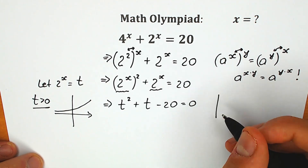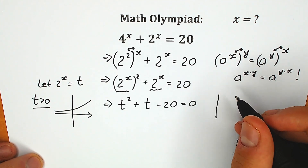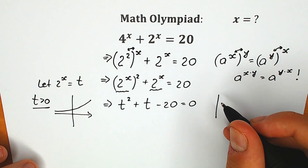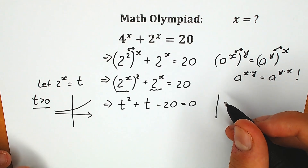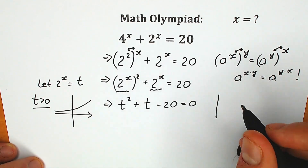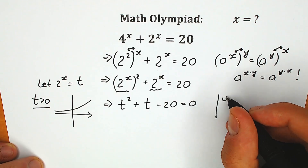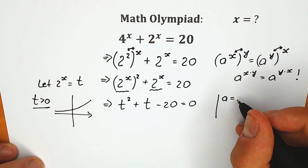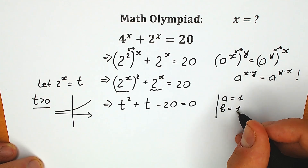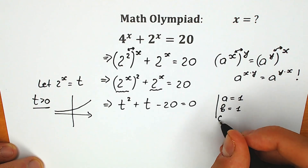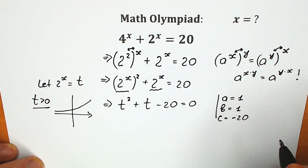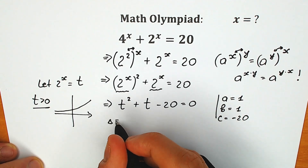I just want to solve this with the basic method of coefficients. There are a lot of different theorems for solving a quadratic equation quickly, but I'll use the basic method. So a equals 1, b equals 1 as well, and c equals minus 20.